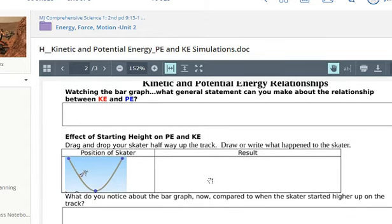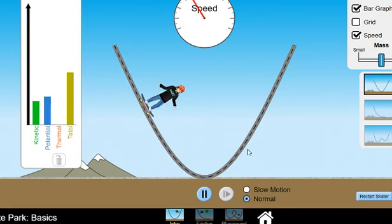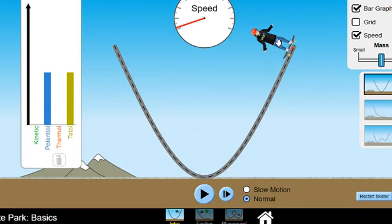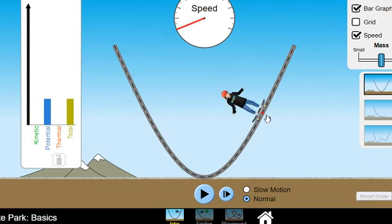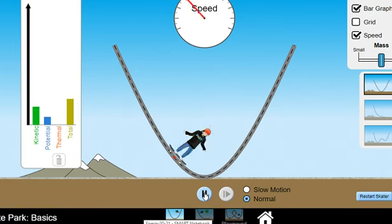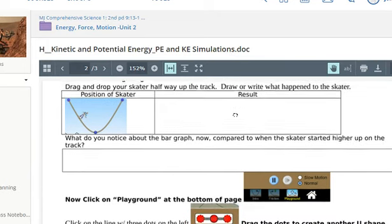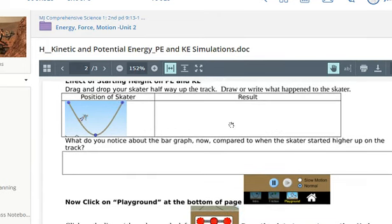Next, I've got the effect of starting height on PE and KE. Drag and drop your skater halfway up the track, draw or write what happened to the skater. Okay, that sounds pretty fun. So I'm going to go ahead and just pause because I know I can't catch that skater. I'm going to put him halfway on the track. Okay, there's about halfway. I'm going to push play. Huh, that's interesting. Now I'm going to put my results in that results box right there. Draw or write what happened to the skater.